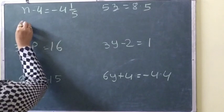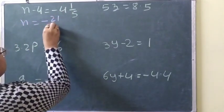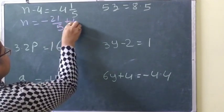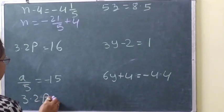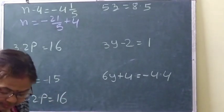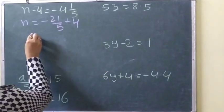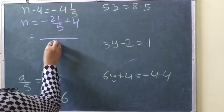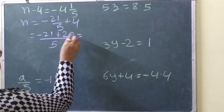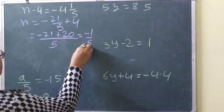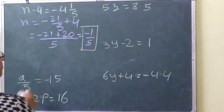For n minus 4 and 1 by 5: n equals minus 21 by 5 plus 4. Taking LCM: minus 21 plus 20, which gives minus 1 by 5. So the value of n is minus 1 by 5.